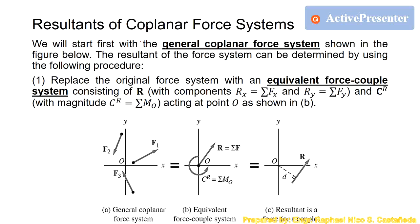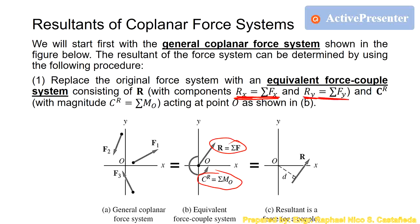To find the resultant of a general coplanar force system, we first replace the original system with an equivalent force-couple system. This consists of a resultant force R with components R_x (summation of forces in X) and R_y (summation of forces in Y), and a couple resultant C_R equal to the summation of moments about the origin O.